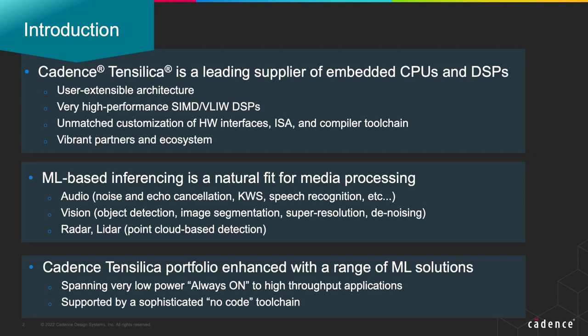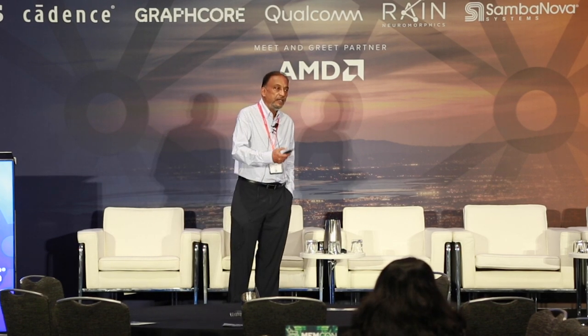We have been working on a portfolio of ML solutions which spans a broad range of performance — from micro-watt level always-on solutions to very high throughput. We wrap it up with a tool chain that we call XNNC, which stands for our Xtensa Neural Network Compiler. The key value proposition there is a high level of automation, and we try to fit into established use flows that our customers have rather than force something new.